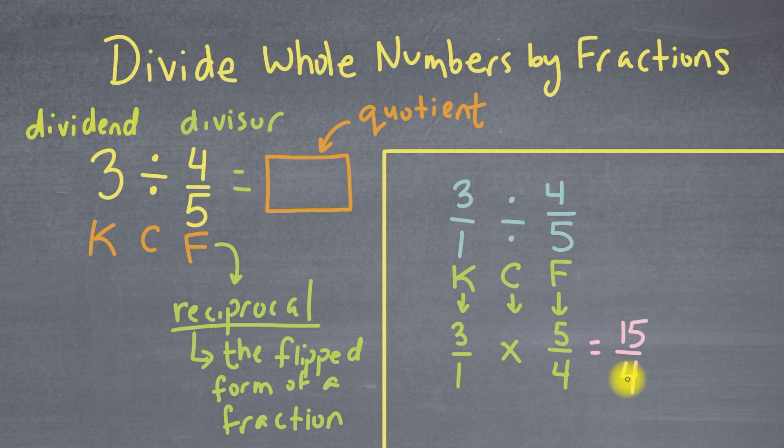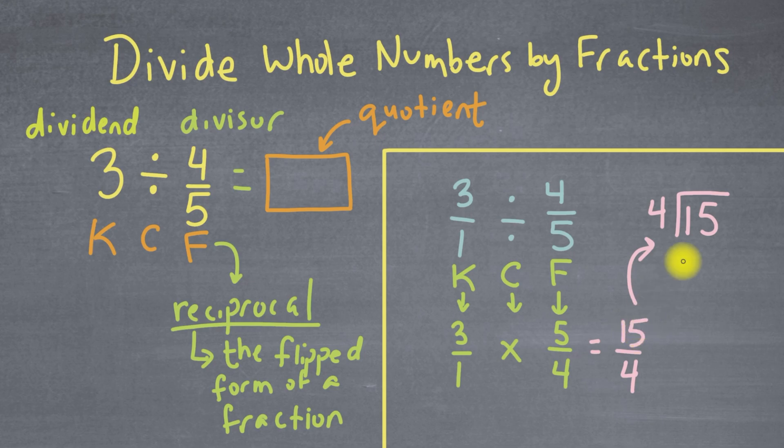So what we're going to have to do is ask ourselves, how many times 4 can go into 15? Or we can actually just divide it. And it'll look like this. So we're going to divide the numerator 15, so it goes inside the house, by the divisor 4, and that's going to go outside the house.